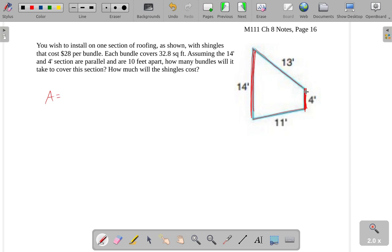So the area of this trapezoid, if you recall, the area of a trapezoid is 1 half times base, B1 plus B2 times height.